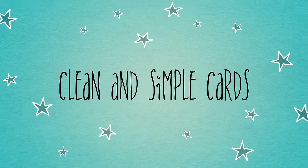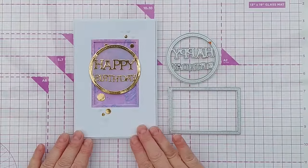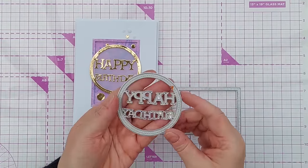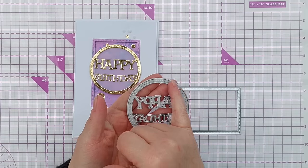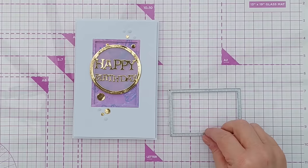Hello crafty friends and welcome to my channel. In today's video, I made this happy birthday card using these two dies: an all-in-one happy birthday with a circle on it, and a stitched frame.